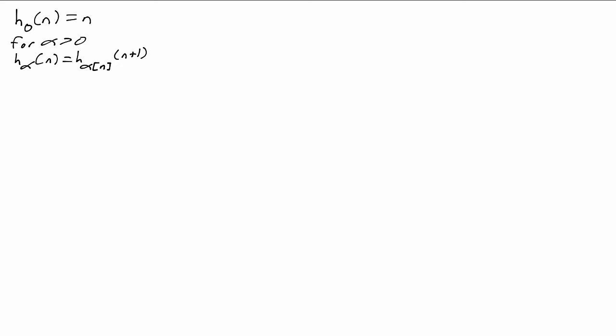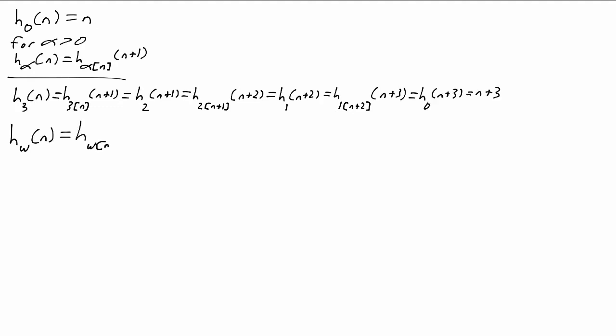We can verify what these functions are for some values of alpha. For example, h_3 of n is h_{3 bracket n} of n plus 1, which is h_2 of n plus 1, which is h_{2 bracket n+1} of n plus 2, and so on, and we get n plus 3. h_omega of n is h_{omega bracket n} of n plus 1, so that's h_n of n plus 1, which is equal to 2n plus 1.